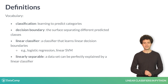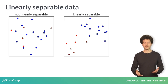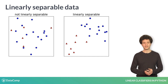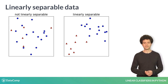A dataset is called linearly separable if it can be perfectly explained by a linear classifier. In the left figure, there's no single line that separates the red and blue examples. Note that for now, we're just talking about binary or two-class classification. Later in the course, we'll discuss multi-class classification with three or more categories.